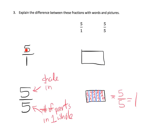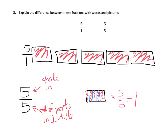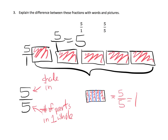Five over five means I'm supposed to have five fifths; five over one means I'm supposed to have five wholes. So I actually have to have one, two, three, four, five — and that's how many I get. Five over one is equal to five wholes — like five dollar bills, five one-dollar bills — that's equal to five.